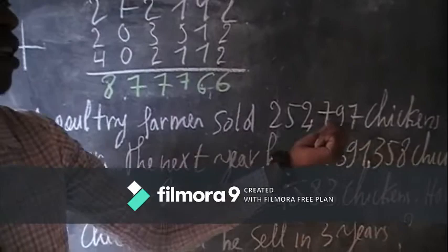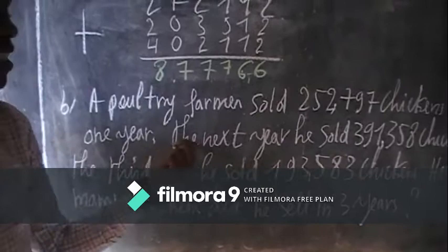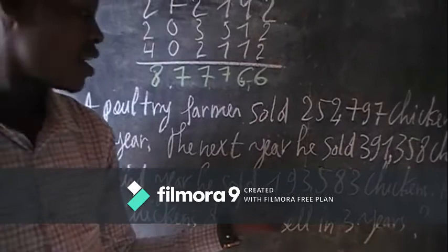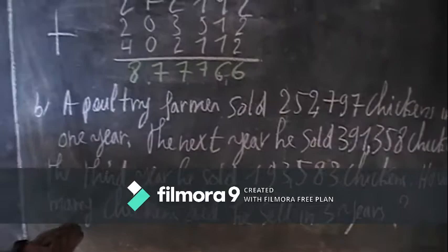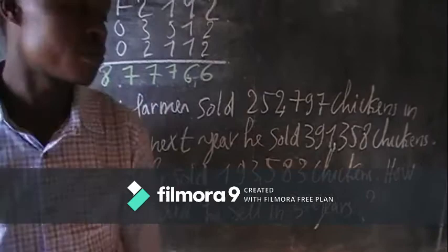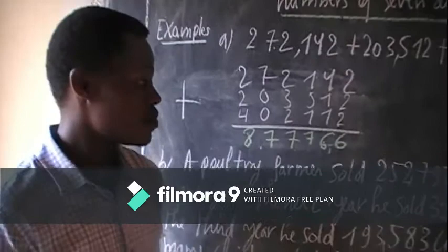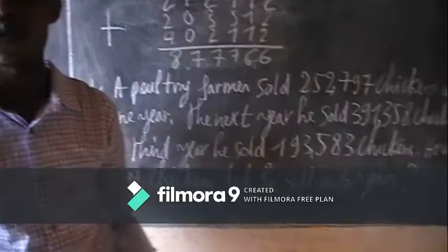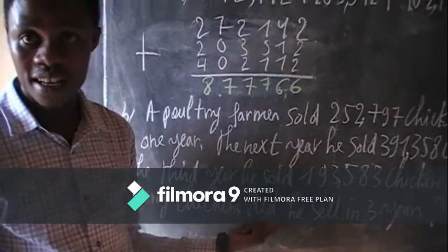A poultry farmer sold 252,797 chickens in one year. The next year he sold 391,758 chickens. The third year he sold 193,583 chickens. How many chickens did he sell in three years? This question says that this farmer sold chickens in the first year, the second year, and the third year.